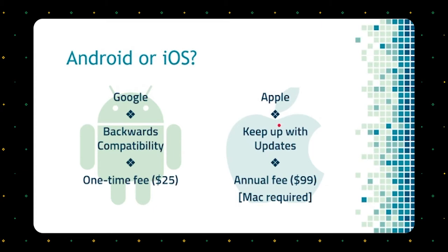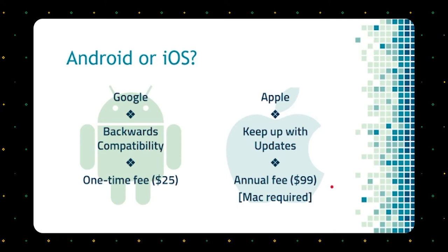If you're releasing a game on mobile, think about your long-term support strategy on both sides. Will you be more aligned with Android — making sure older devices aren't left behind — or more aligned with Apple, keeping your game forward-compatible with new releases? From a business perspective, Android is a one-time fee to become a developer, while Apple has a subscription model with an annual fee. You also need a Mac to publish on Apple — macs are expensive, so that's something to factor in.